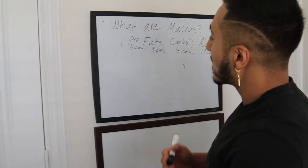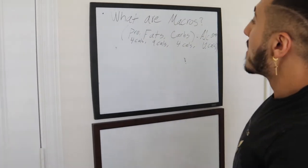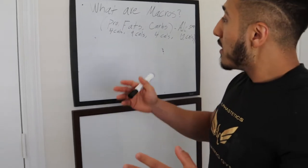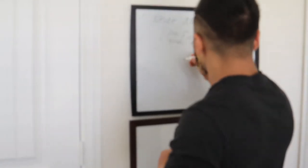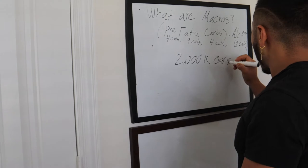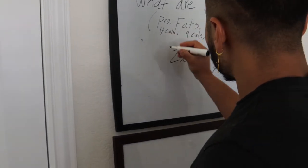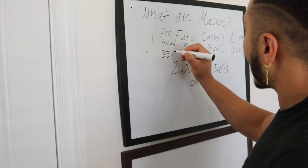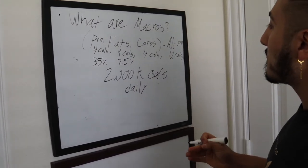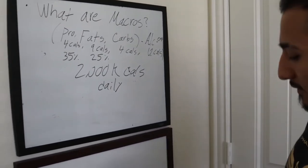Let's go into how to break this down. We'll keep it simple: four, nine, four — and ten for alcohol. For example, a client's goal is to intake 2,000 calories a day. We'll give this client 2,000 kcal daily. Their goal: 35% from protein, 25% from fats, and we're working out the remaining percentage now — Chris, help me out: 35 plus 25 is 60, so we're missing 40%.